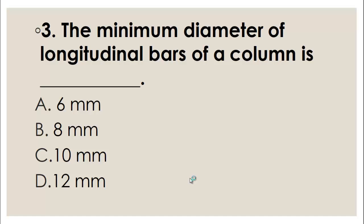MCQ number three: The minimum diameter of a longitudinal bar of a column is — A) 6 mm, B) 8 mm, C) 10 mm, D) 12 mm. According to British Standard and IS Standard, the minimum diameter of a longitudinal bar that can be used in a column is 12 mm, so the right choice is D, 12 millimeter.